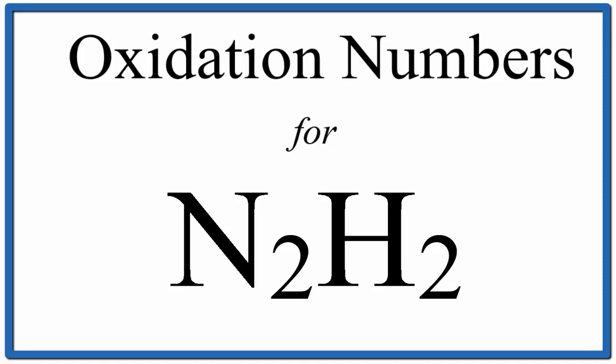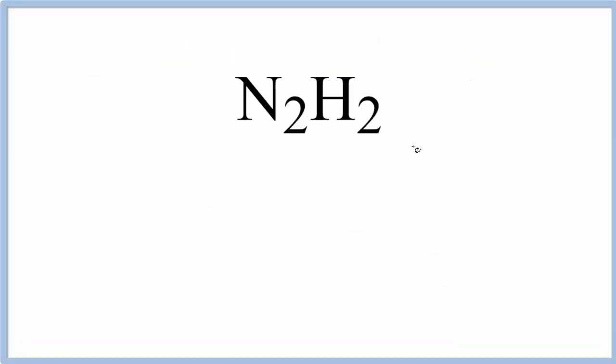To find the oxidation number for nitrogen in this N2H2 molecule, we know that if we add all of the oxidation numbers up, they're going to equal zero. This is a neutral compound. It doesn't have a plus or minus charge after it like an ion would.